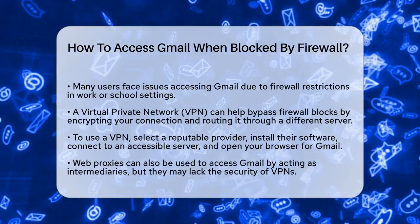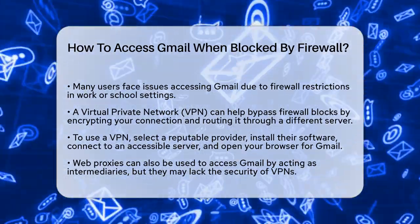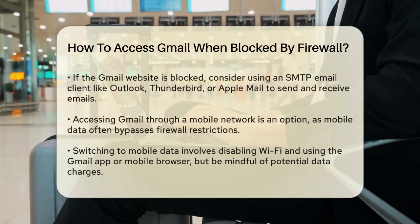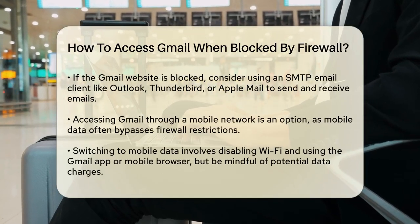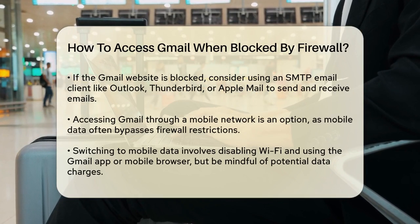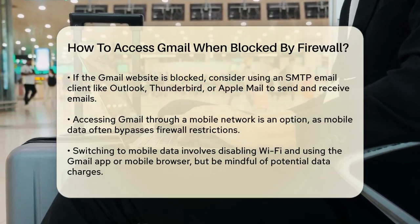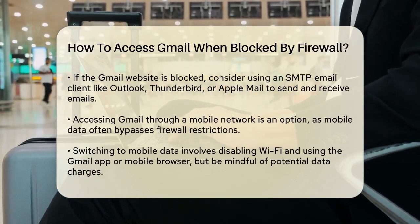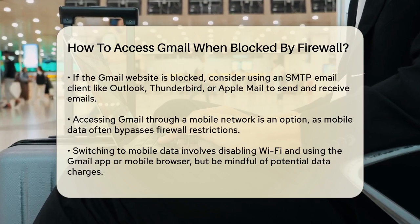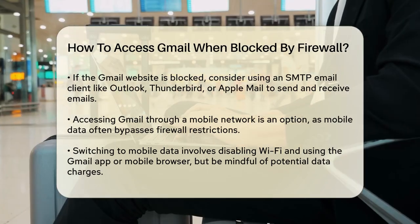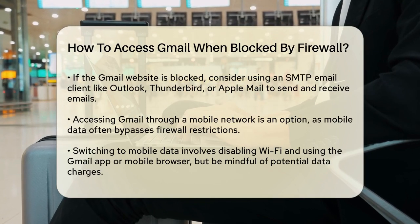Another method is to use a web proxy. A web proxy acts as an intermediary between your device and the internet, allowing you to browse anonymously and access blocked websites. You can visit a web proxy website, enter the Gmail URL, and access Gmail through the proxy link. However, be cautious with web proxies as they may not offer the same level of security as a VPN.